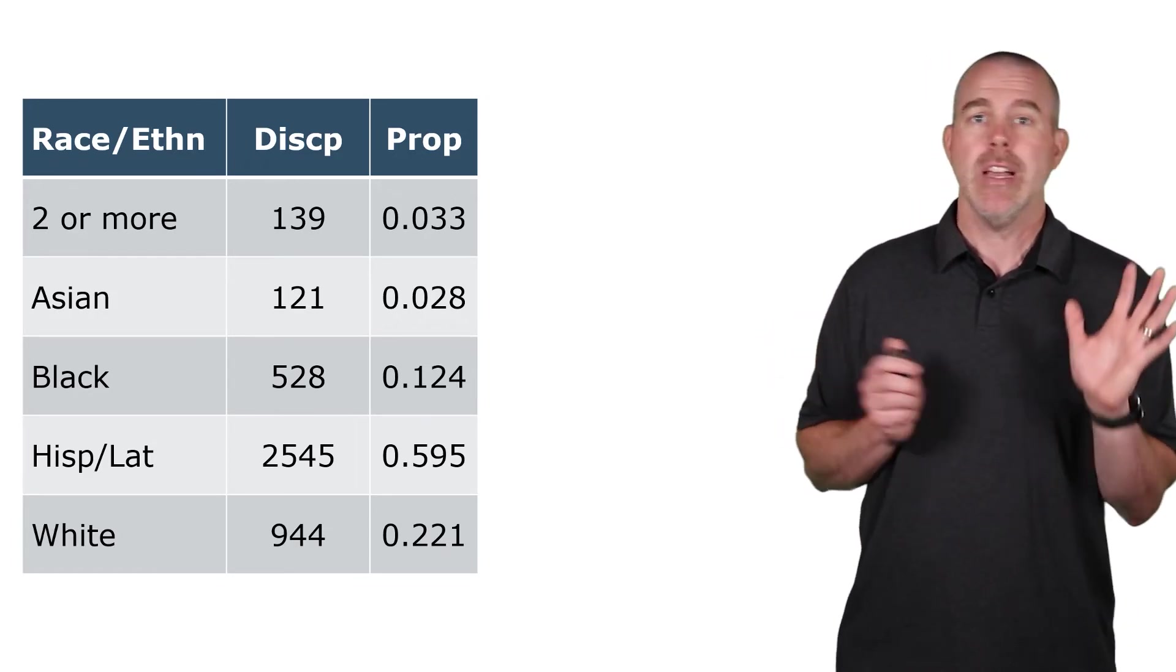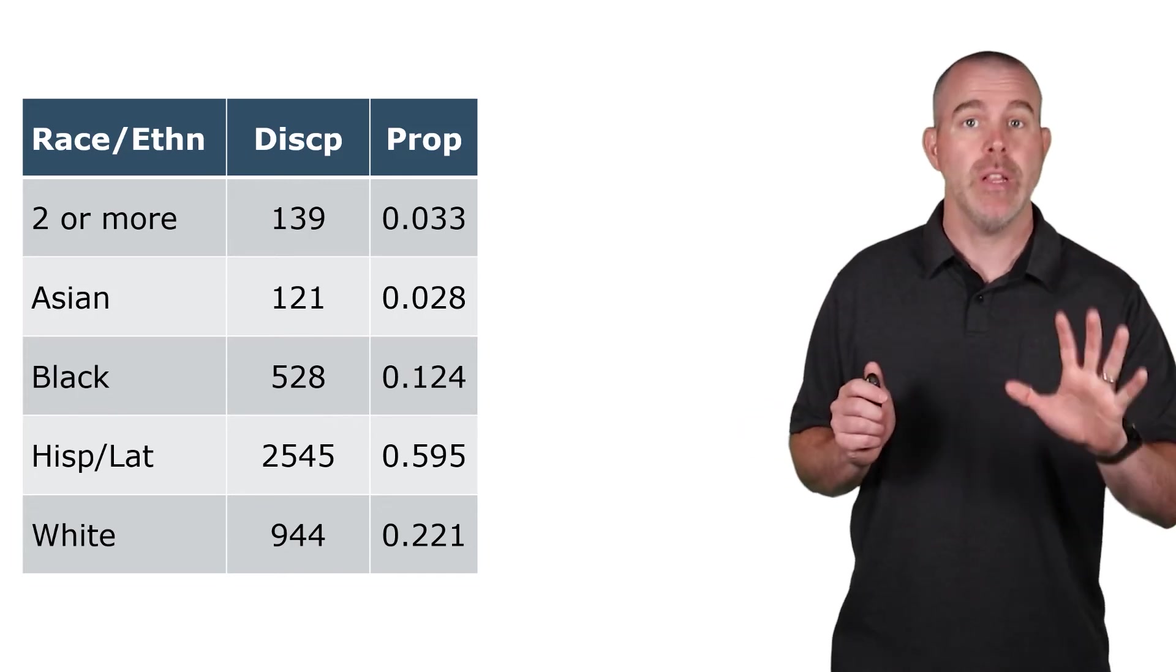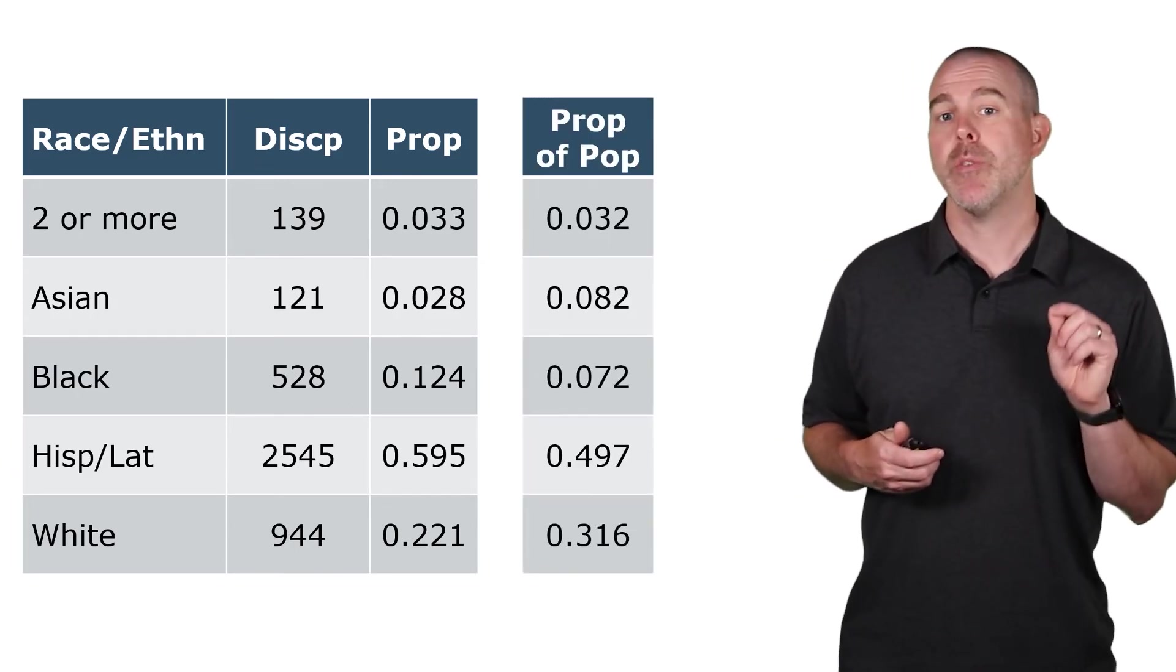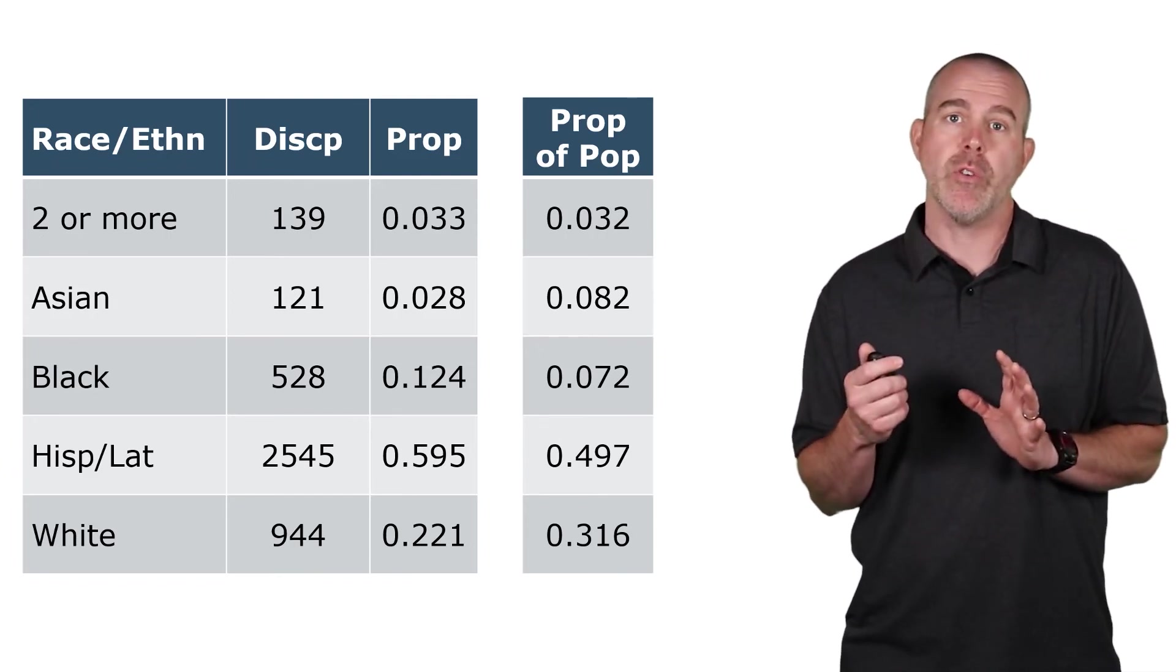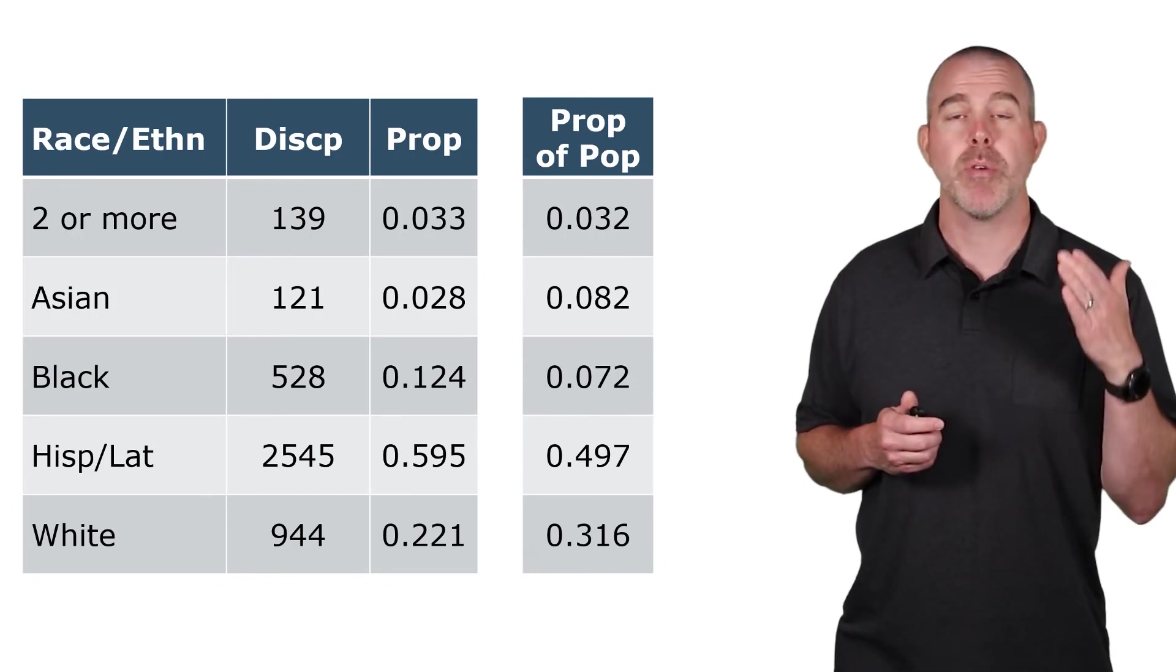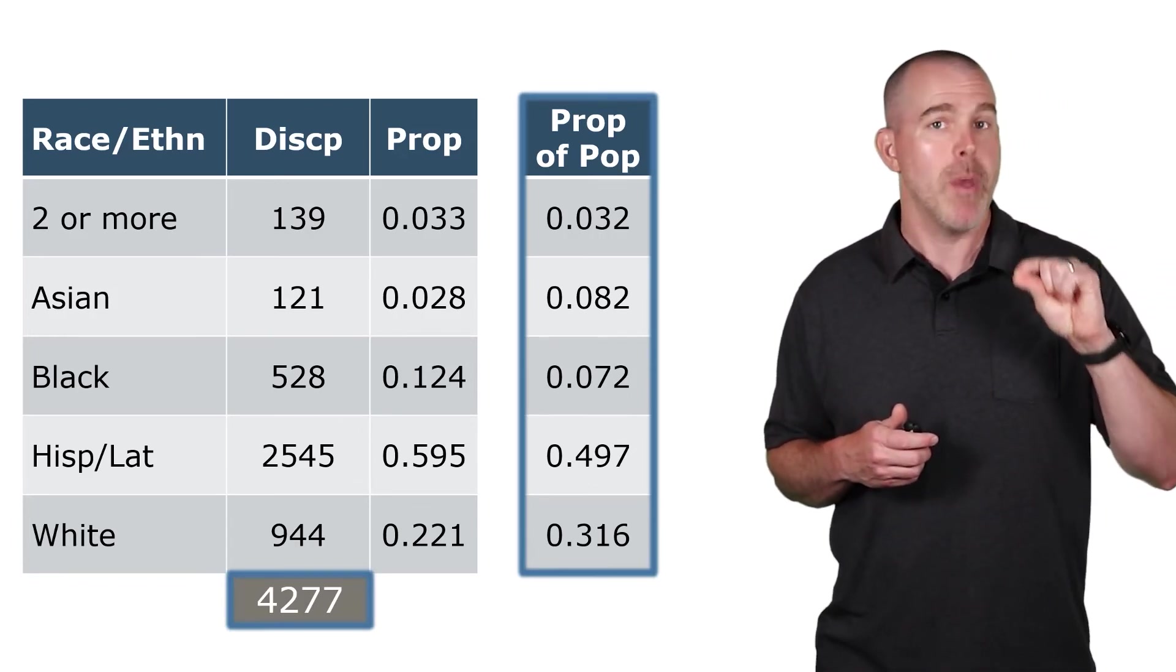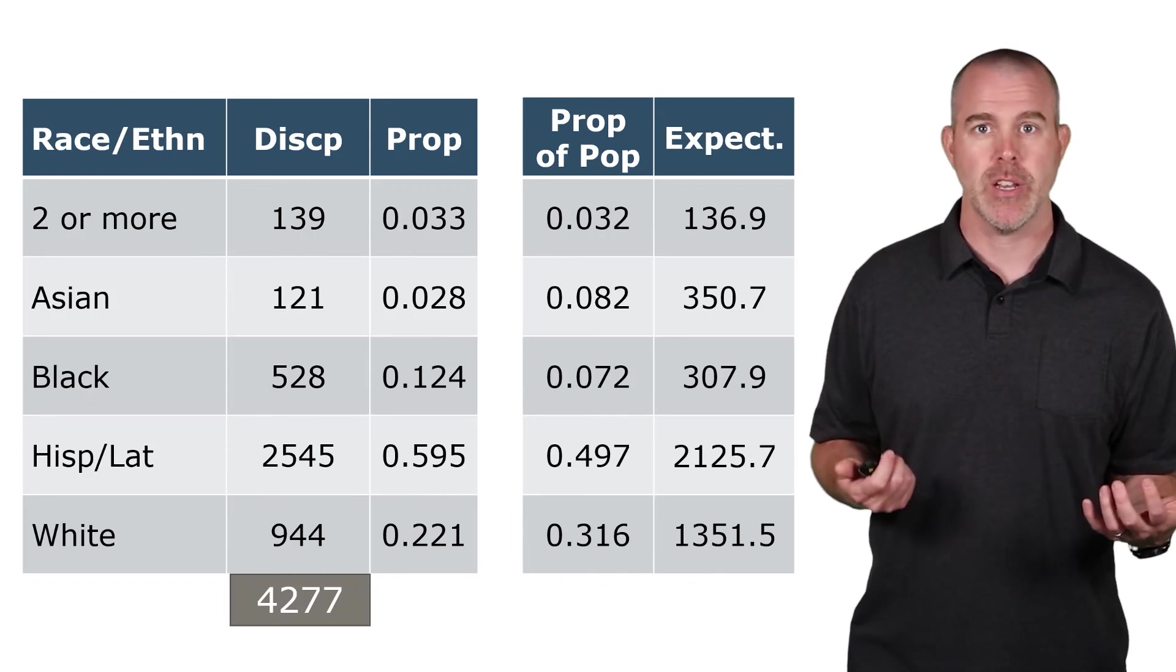Now, you might look at this and say, whoa, look at that. Hispanic Latinx are hugely disciplined. But maybe they're just a big part of this population, right? You have to be really careful. So what we want to do is compare these proportions of those disciplined, what proportion are from each race or ethnic group, and then compare that to the population. So here's the proportion of the population. And you can see now we have some groups are overrepresented and other groups are underrepresented. So what we're going to do now is compute what we would expect as the count if the proportions followed the number from the population. So there's 4,277 total discipline referrals. And so if we take those and multiply by the proportion that each group is of the population, here's what we would expect for each group if they followed the same distribution as the population. Now, then, we have an observed versus expected, and we can do a test.